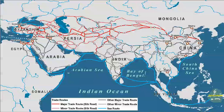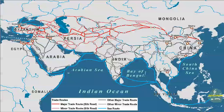Srivijaya is the route between two modern countries — Malaysia and Indonesia. In the lower right-hand corner it says Spice Islands. Why do you think they were called the Spice Islands? Maybe for the spices and trade goods.